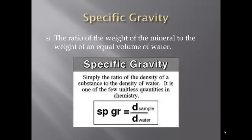Another property we will work with in class is specific gravity, which is pretty similar to density. It is the ratio of the weight of the mineral to the weight of an equal volume of water. The density of water is 1 gram per milliliter, and since the units cancel out, specific gravity is a unitless quantity. We mostly talk about the density of the mineral rather than specific gravity.